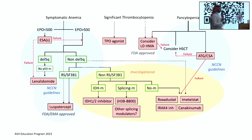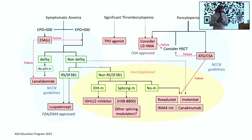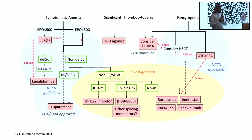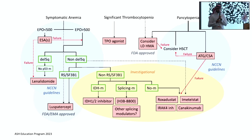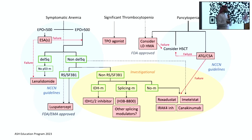We should not forget how to treat thrombocytopenia in these patients. TPO agonists have been tested in multiple studies, initially with romiplostim showing good outcomes up to 50% response rate. A more recent randomized study using eltrombopag versus placebo showed responses of more than 50% and clinically meaningful reductions in bleeding. There was no increased risk of leukemia transformation in those studies, but fibrosis remains a major concern.